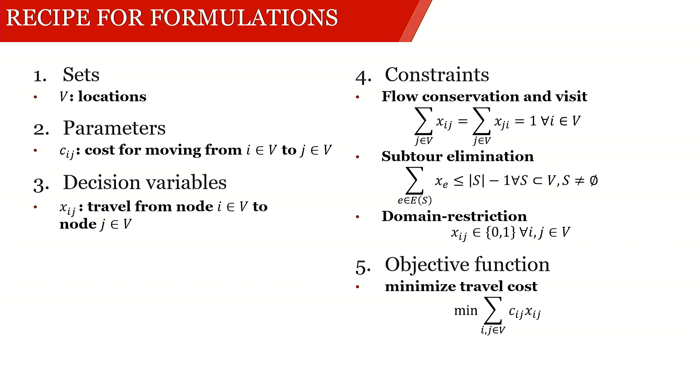So in the TSP, we have locations, we have the transport costs as input sets and parameters. Then we have a decision variable which tells us if we're travelling from I to J. As constraints, we have flow conservation and visit, we have subtour elimination, and we have domain restriction. And in our objective, we minimize the entire transport costs.